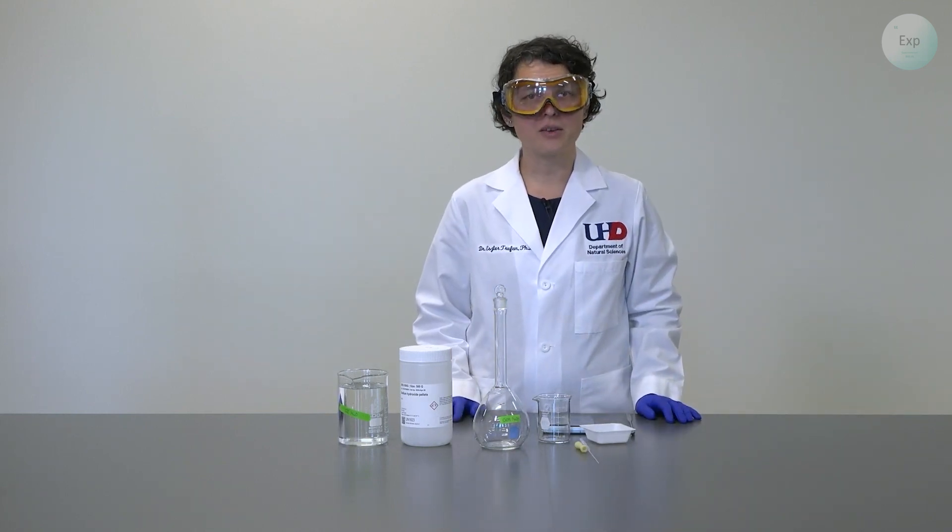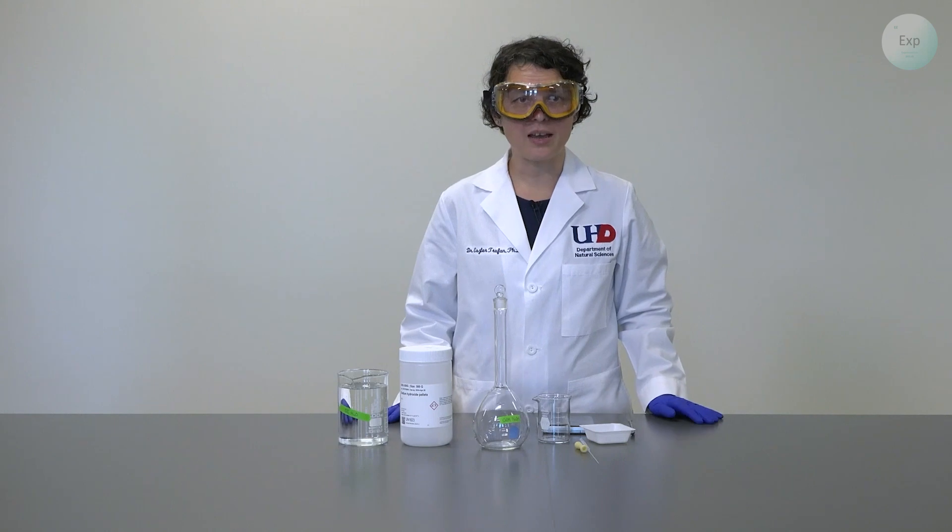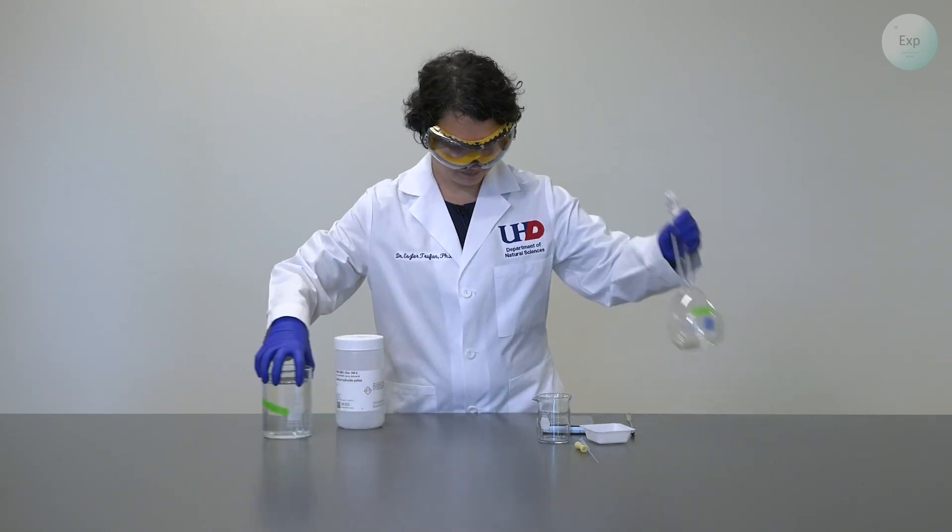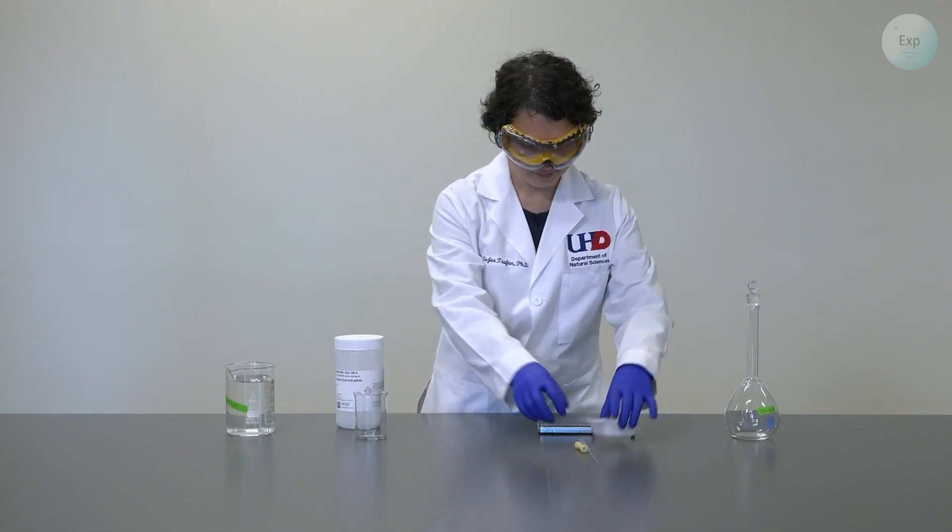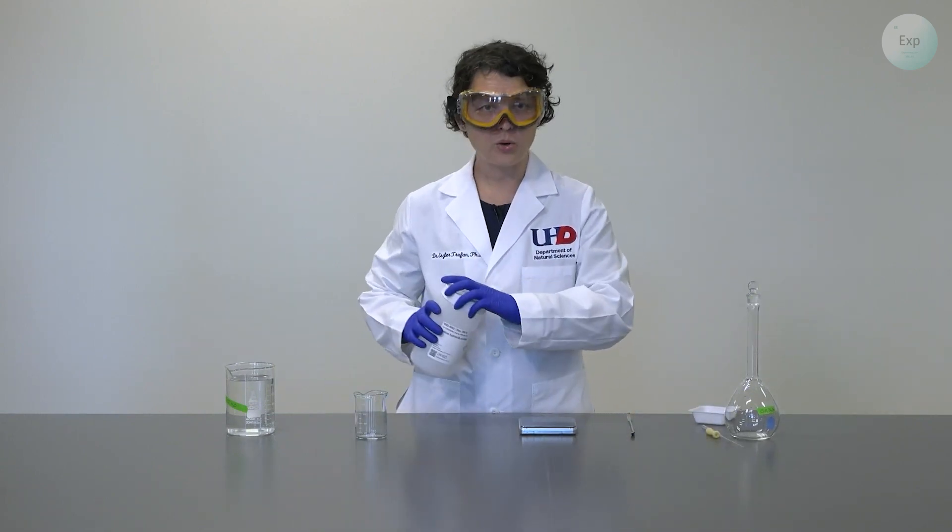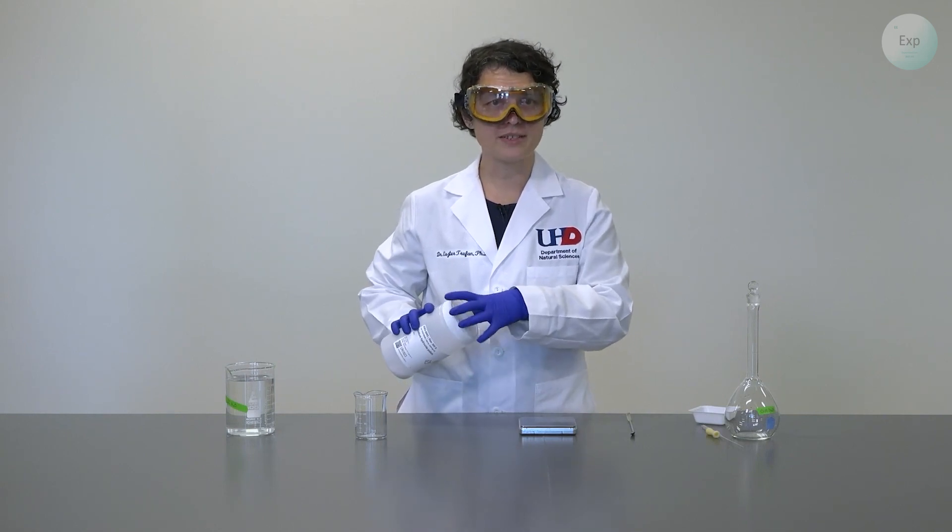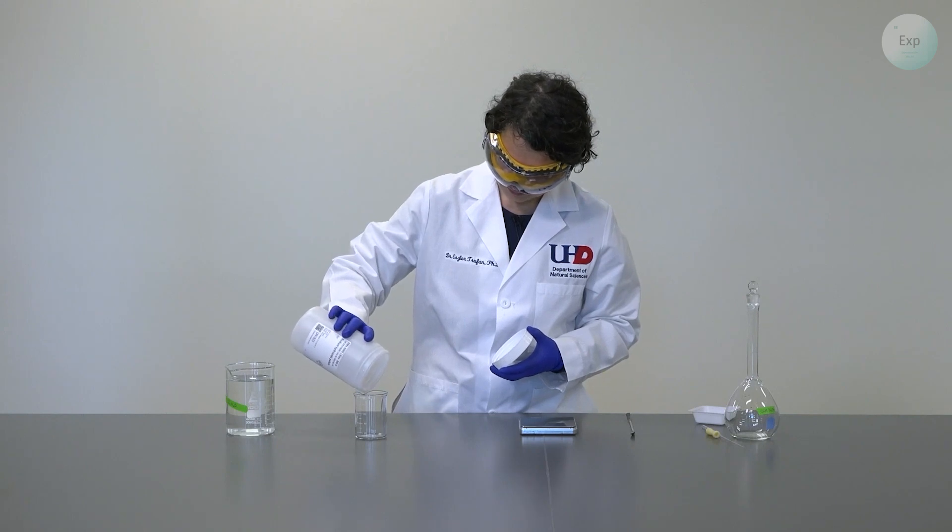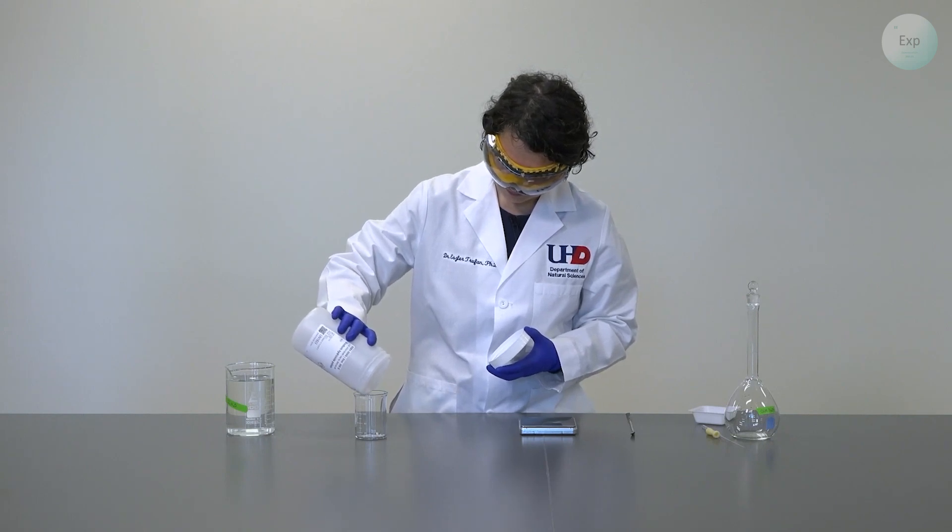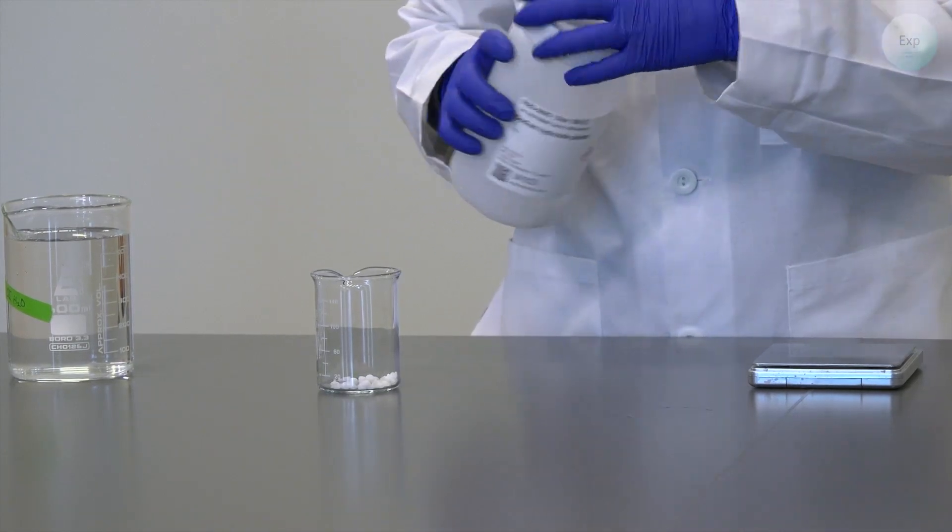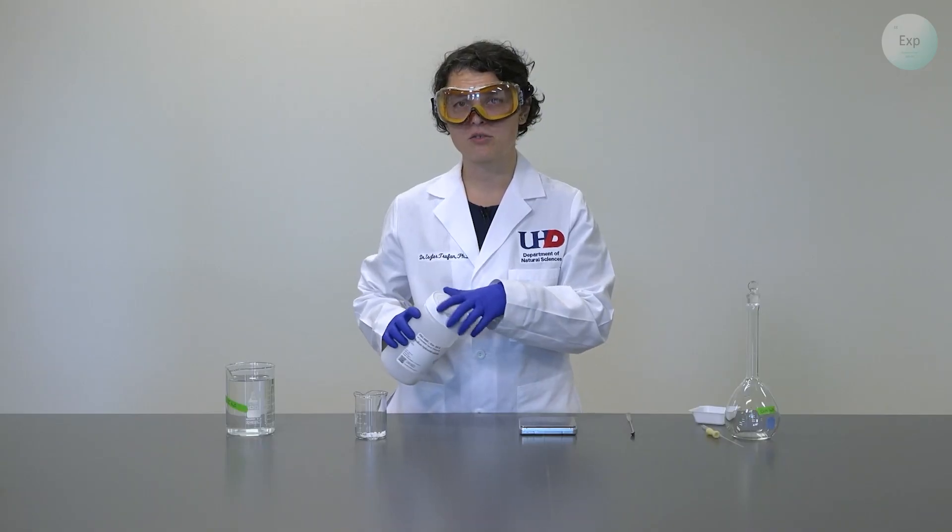So let's get started. The first thing that we're going to do is measure out two grams of the sodium hydroxide pellets. To do that, first, we open up our container and transfer a small amount of sodium hydroxide pellets into a secondary container. We want to be rather quick with this because sodium hydroxide is a hygroscopic material.